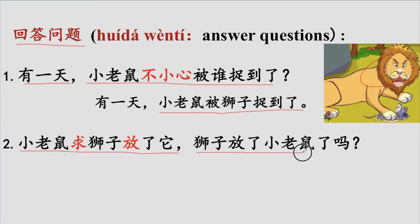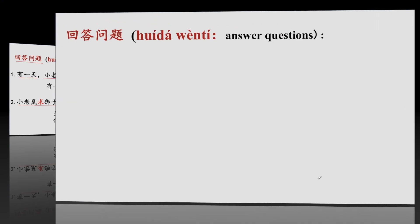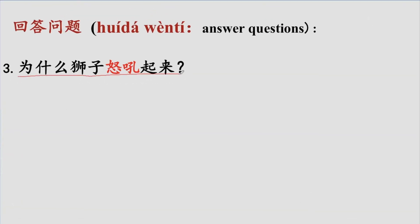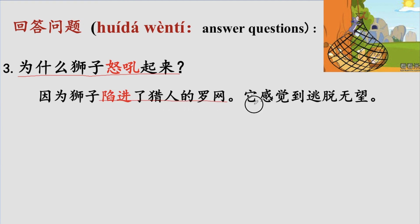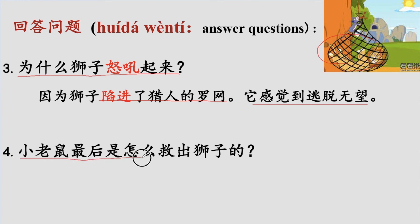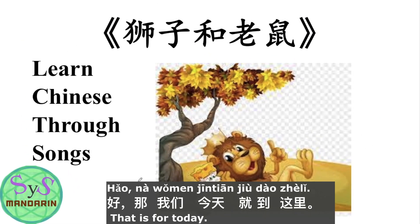好，那现在我们来回答问题。第一个问题：有一天，小老鼠不小心被谁捉到了？答：被狮子捉到了。第二个问题：小老鼠求狮子放了它，狮子放了小老鼠了吗？答：虽然狮子不相信老鼠可以救得了自己，但是它还是放了小老鼠。第三个问题：为什么狮子怒吼起来？答：因为它陷进了猎人的罗网，感觉到逃脱无望。第四个问题：小老鼠最后是怎么救出狮子的？答：小老鼠咬断了绳子，救出了狮子。